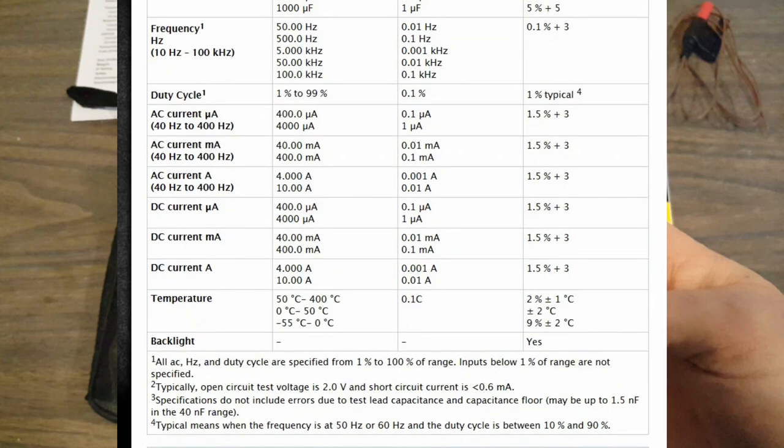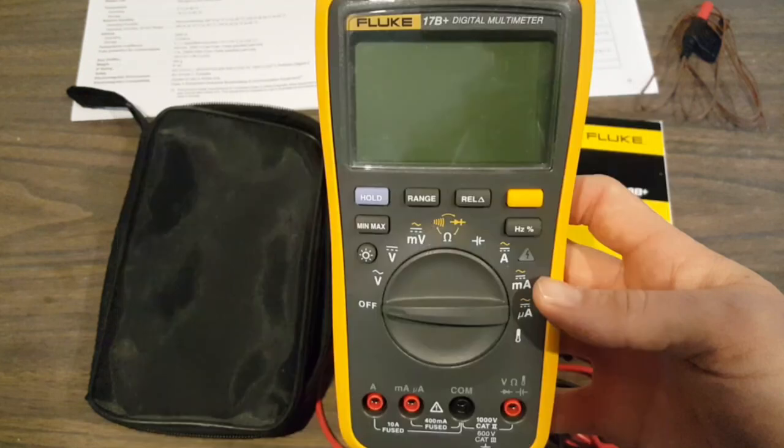Current, in all ranges, 1.5% and temperature, around 2%. These are fairly decent numbers. And, as hobbyists, we can certainly survive this level of accuracy. And, it's also specified to remain in range for at least a year after calibration.